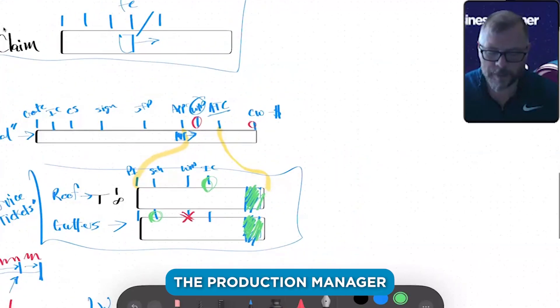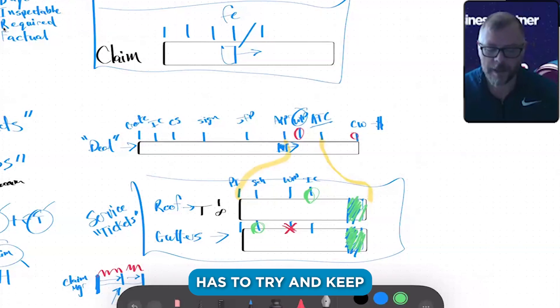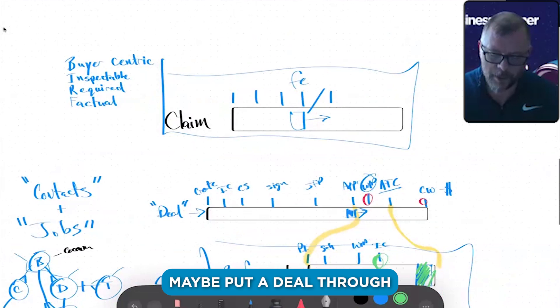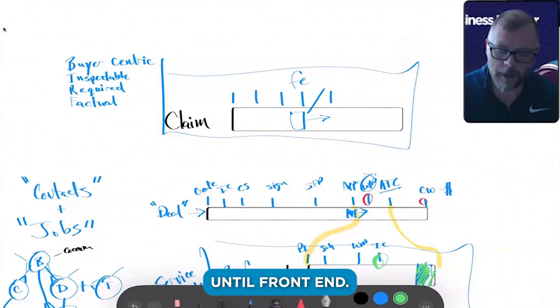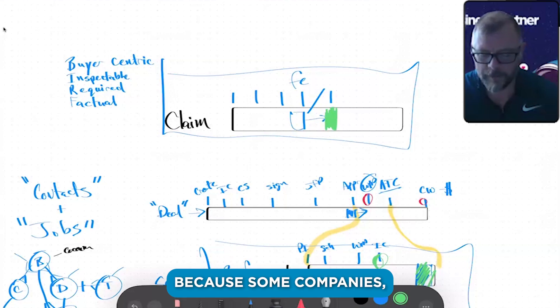The idea is that the production manager playing this Tetris game has to try and keep all this organized. He also doesn't want to maybe put a deal through until front-end supplementing is complete.